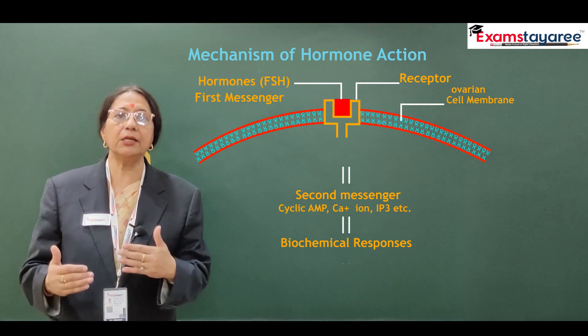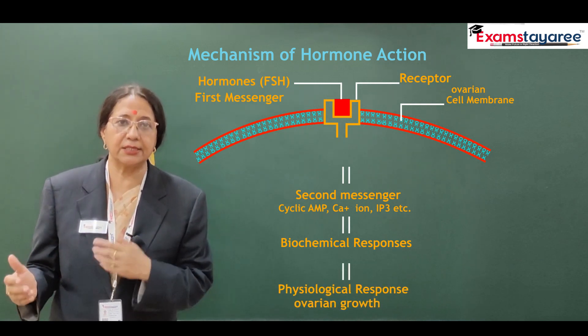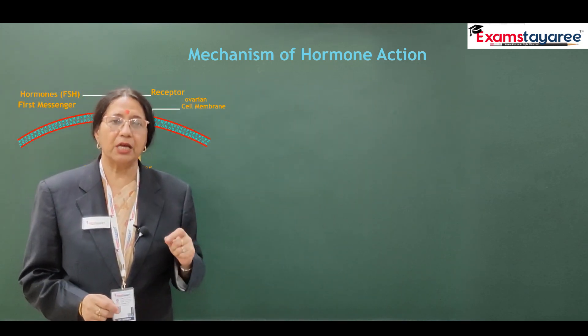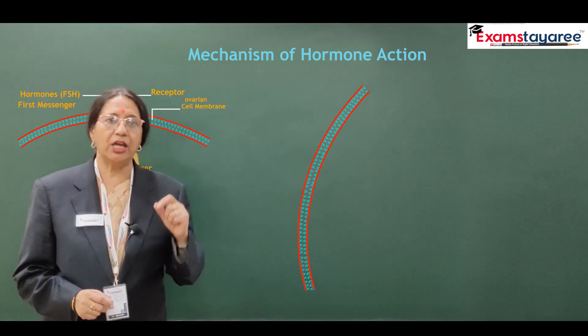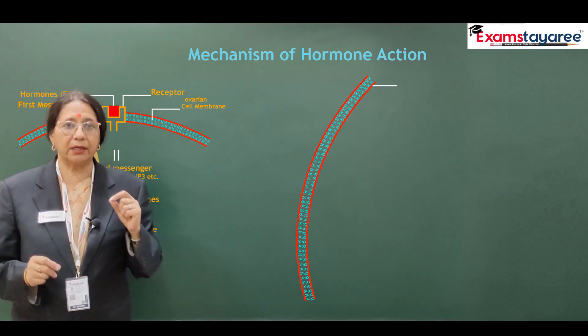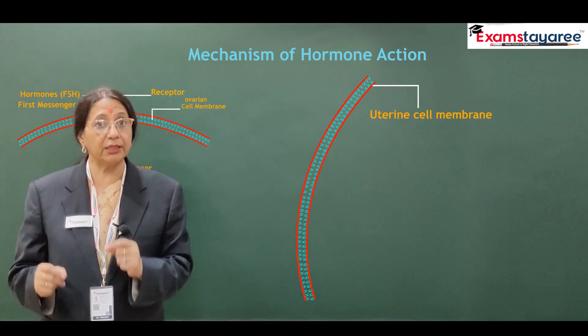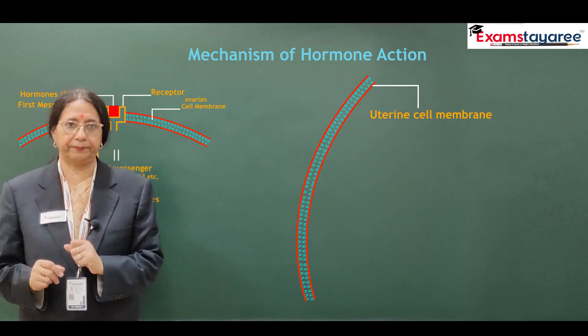For example, if the hormone is FSH, it will bring about a physiological change in ovarian growth.